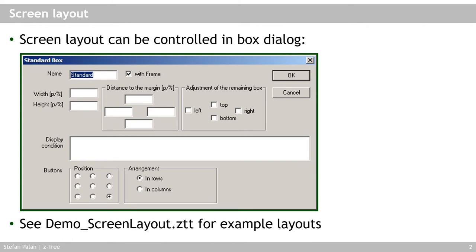We'll come back to what I mean by screen area in a few minutes. By default, if you don't put anything in the width/height fields, z-Tree makes the box fill the entire screen, and positions it in the middle. If you specify width or height values, then it matters where z-Tree puts the box. You can control this with the positioning area, telling z-Tree what distance to the margin of the screen you want for your box.